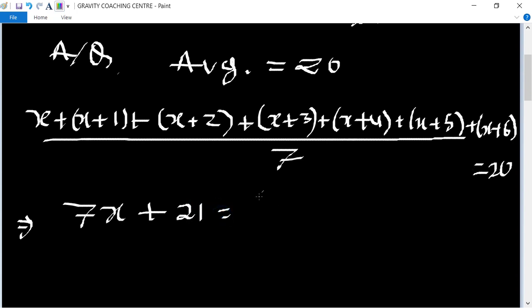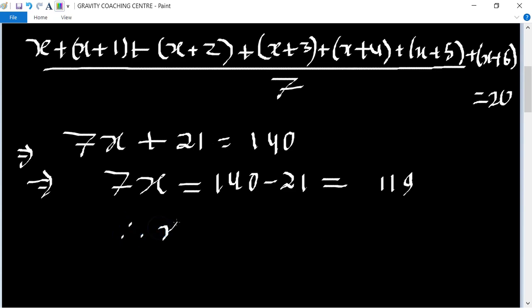This implies that 7x equals 140 minus 21, so it will become 119. Therefore x equals 119 upon 7, which equals 17. So the value of x is 17.